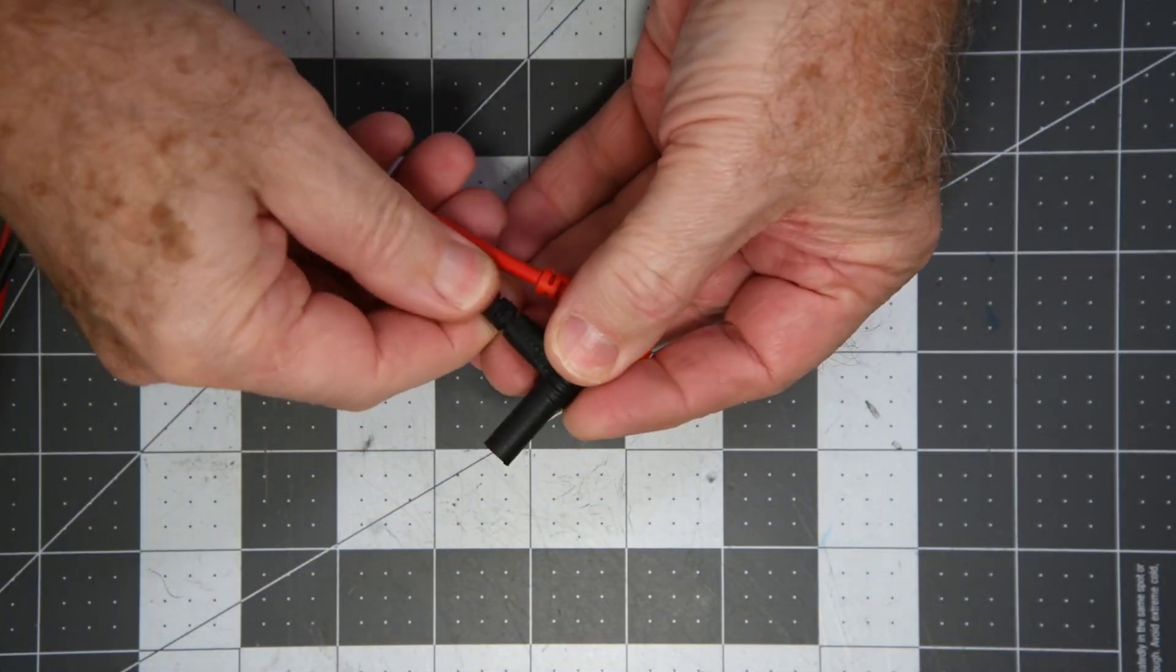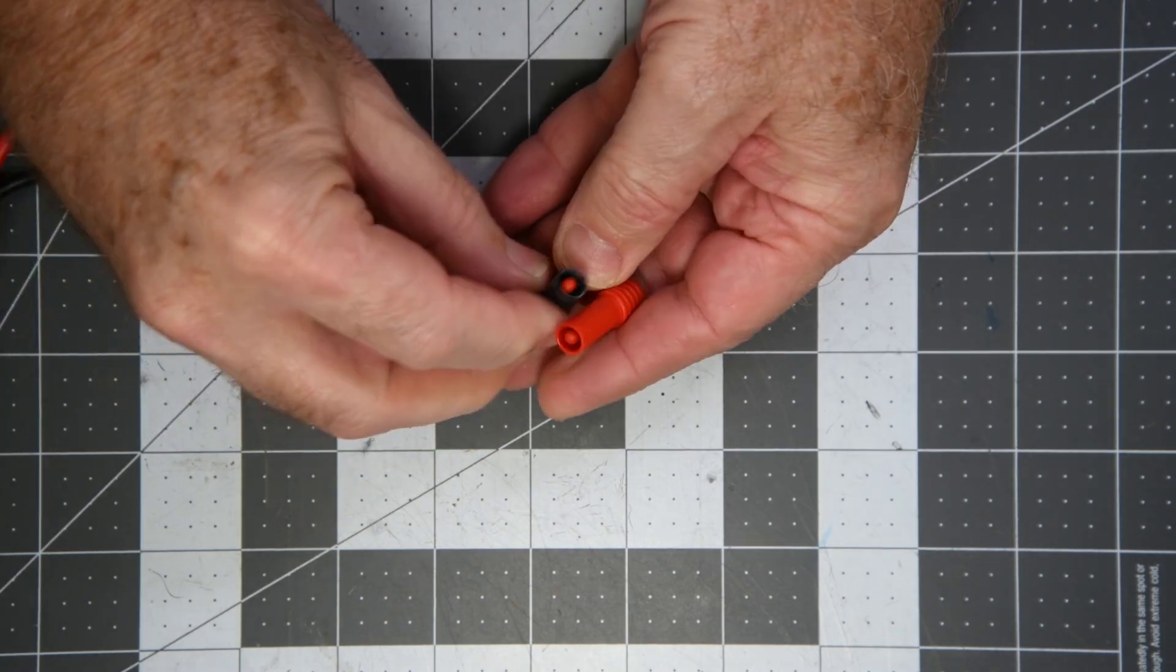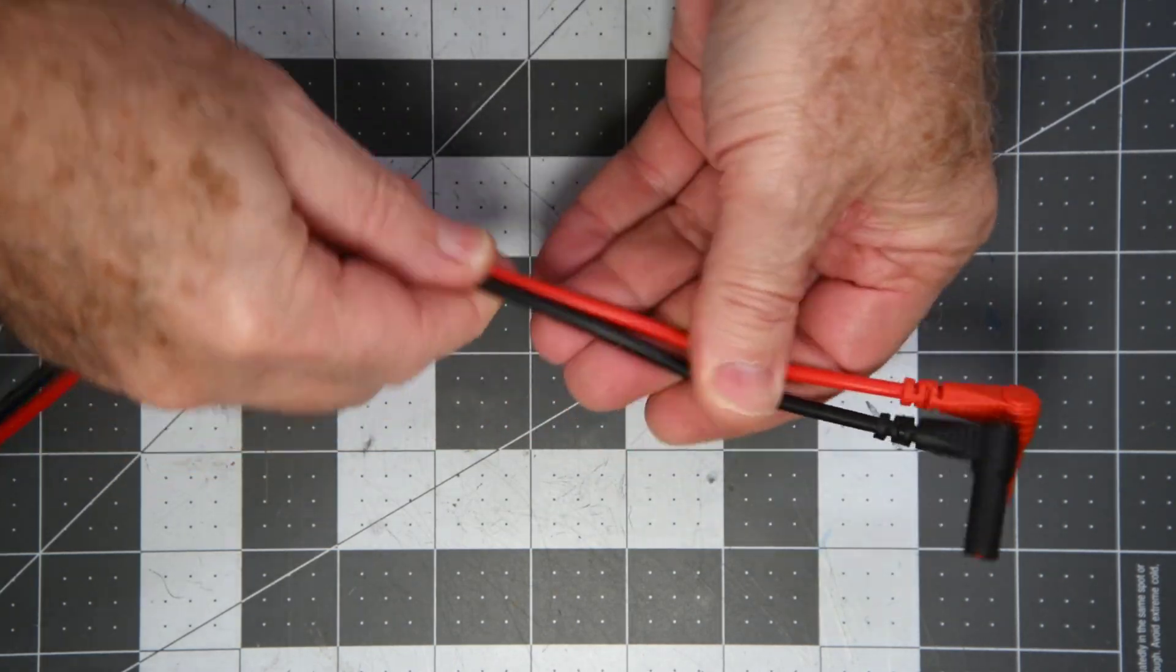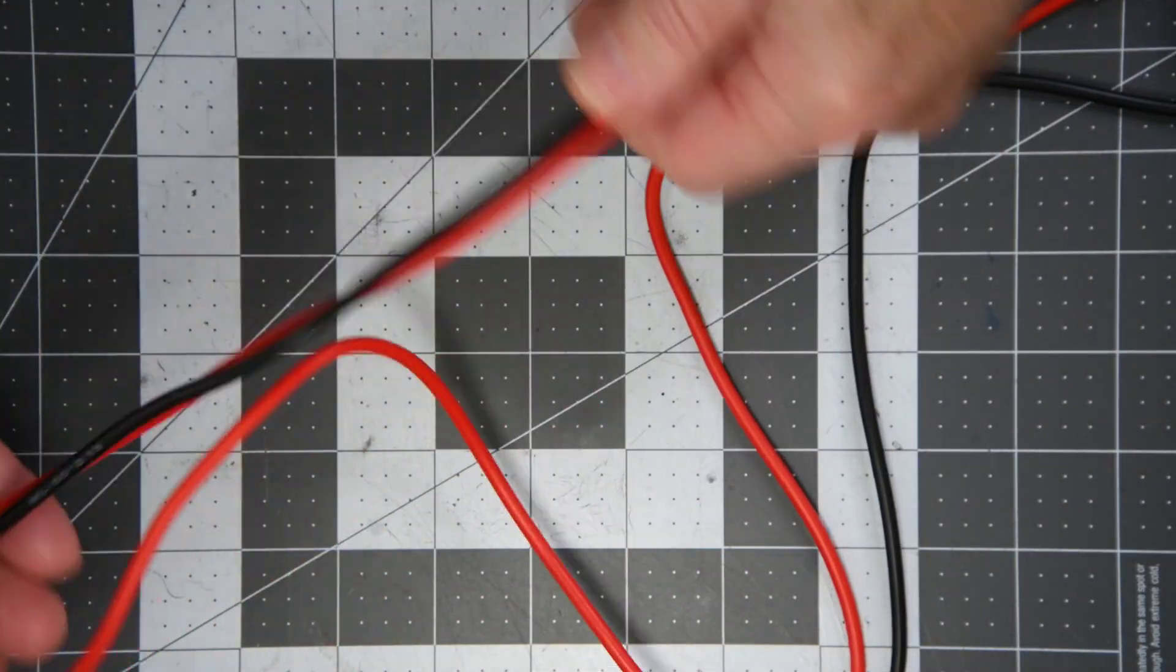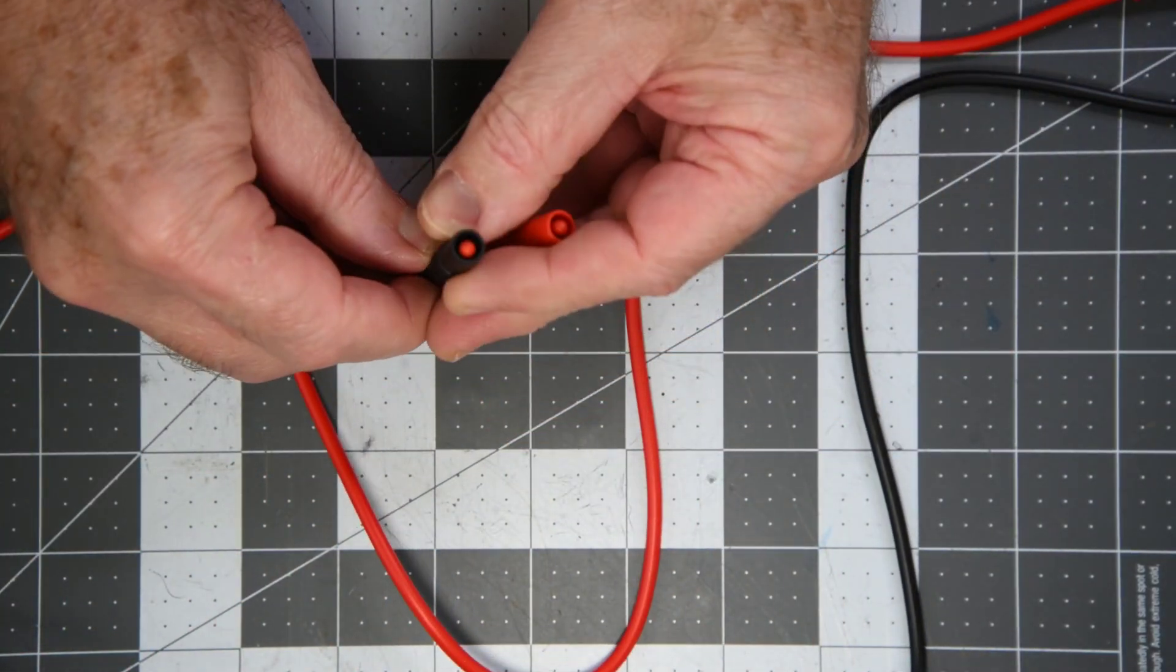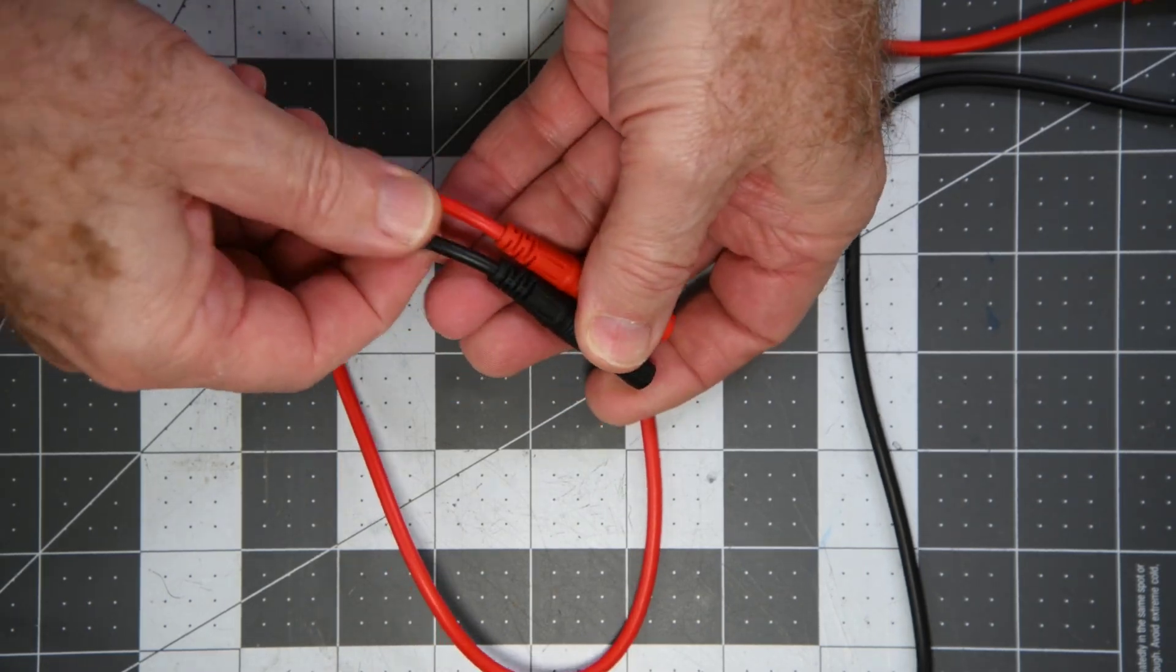Leads feel very nice. Very soft for a PVC lead set. I'm pretty pleased with the way they feel. Now they don't feel as good as a nice silicon test lead set, but the whole kit was less than $45.